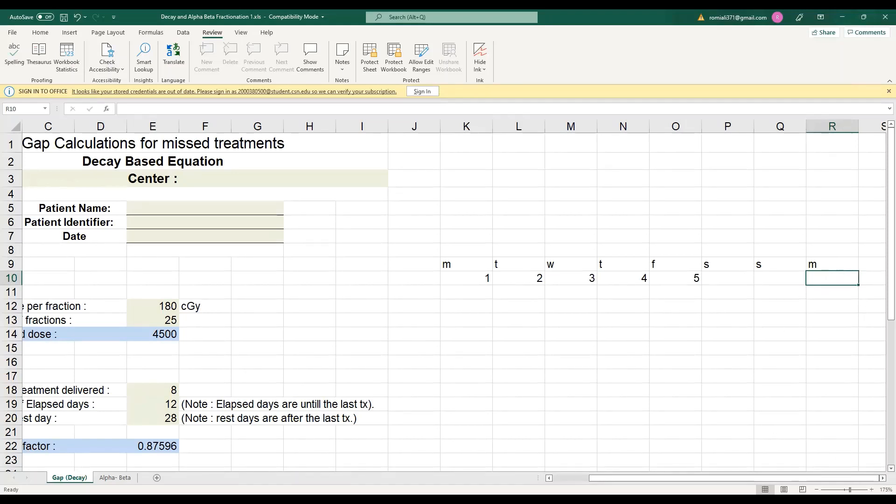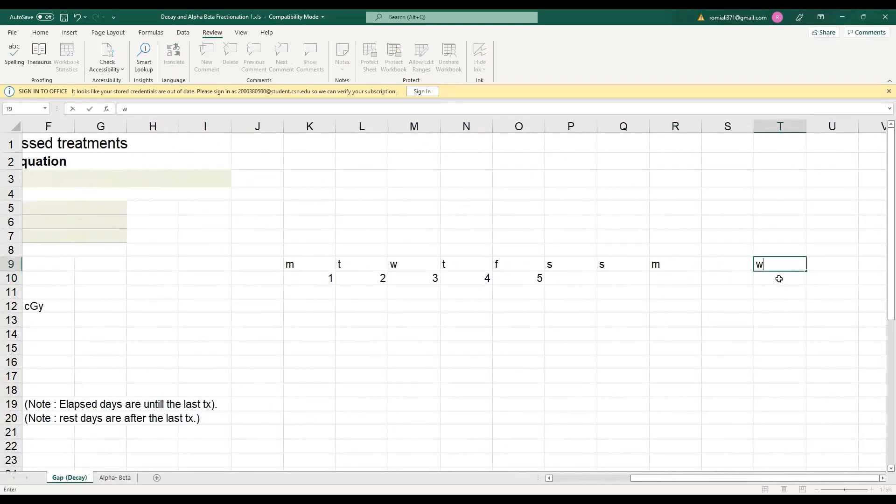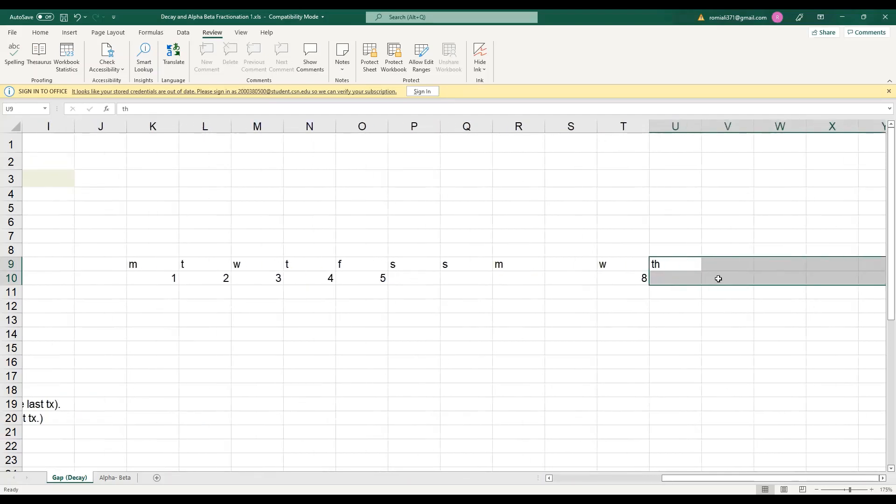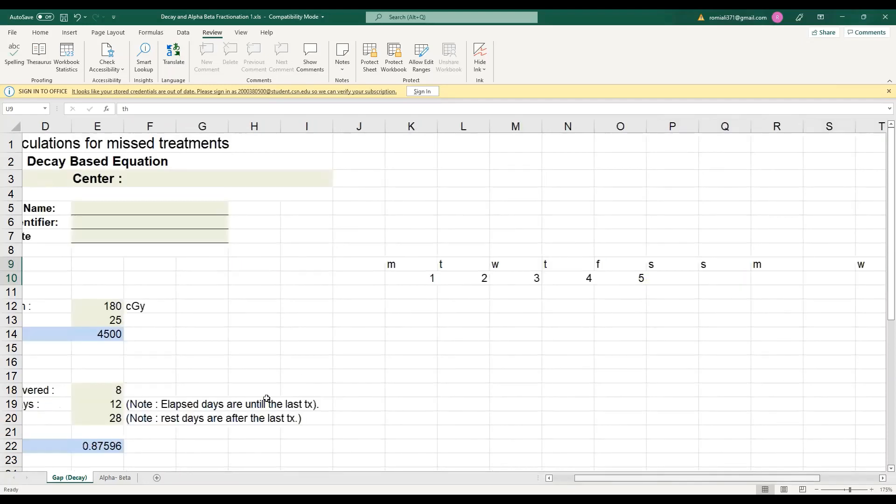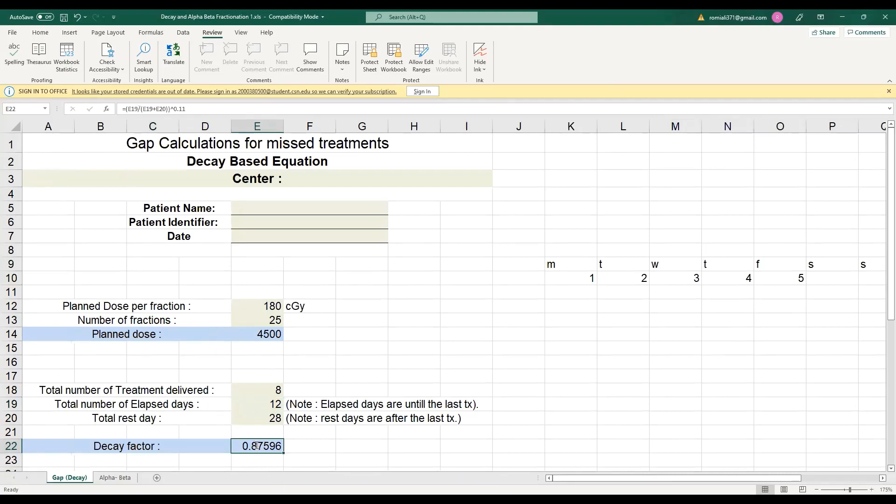According to elapsed days, let's say here was the eighth treatment that happened and we have 12 elapsed days. Then patient stopped coming from Thursday and after 28 days, patient appeared again on some day. Now we will count our break from here to 28 days that the patient was on rest. Up to here are our number of treatments and the elapsed days. When we are putting here in the equation, we need here, you can see we only need number of elapsed days and the rest days here. Put in these two numbers and you will get your decay factor.